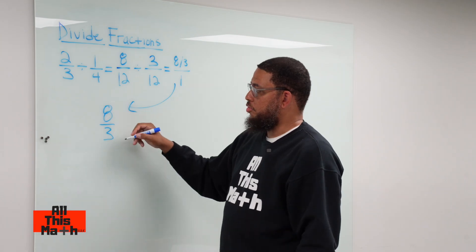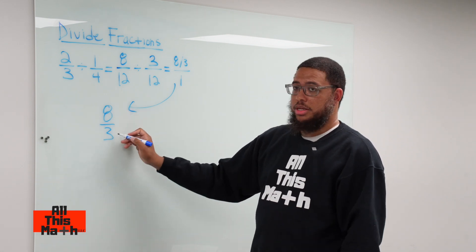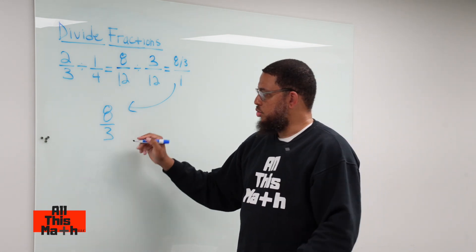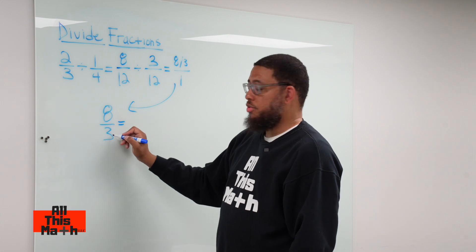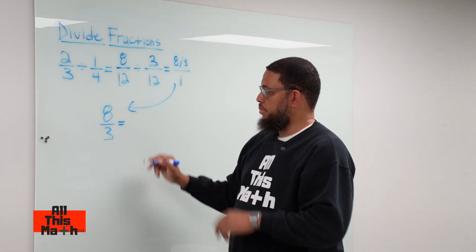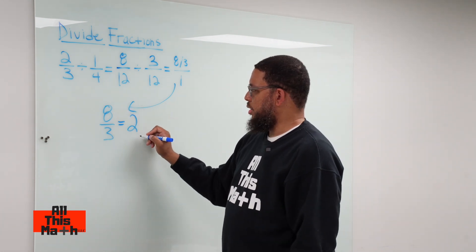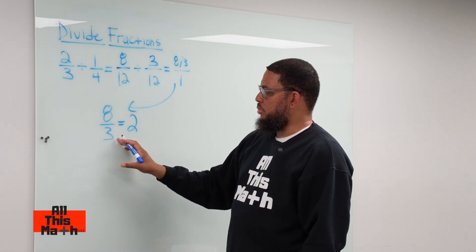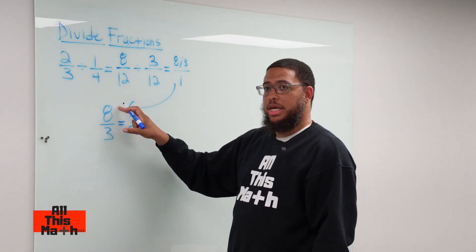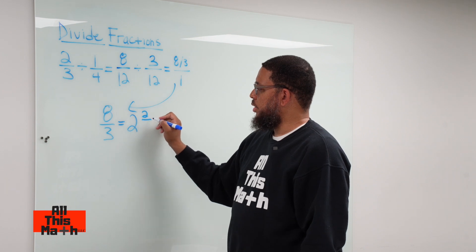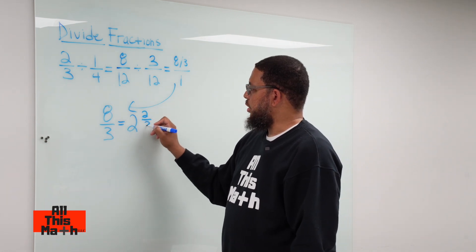This is an improper fraction because our numerator is bigger than our denominator. We can convert this to a mixed number. How many 3s can fit in 8? Two of them. That's our whole number part. Because 2 times 3 gives us 6, the difference between 8 and 6 is 2. So 2 is our numerator, and we keep 3 for our denominator.